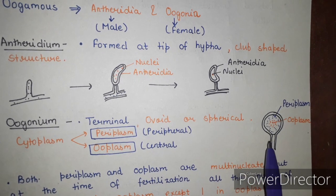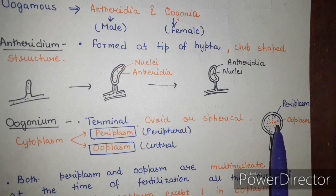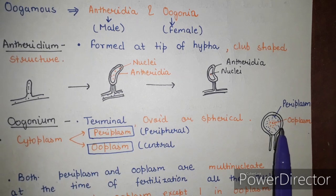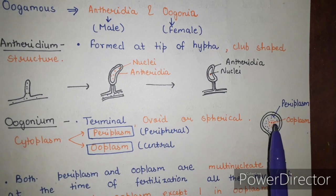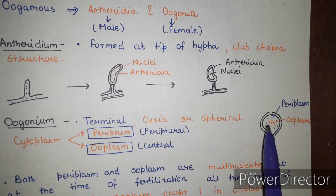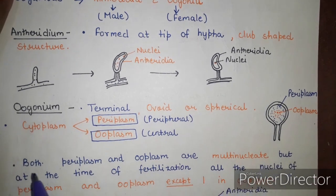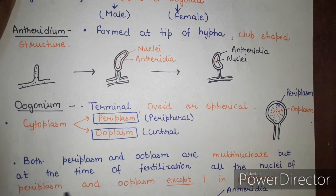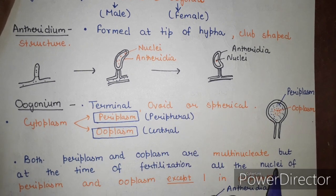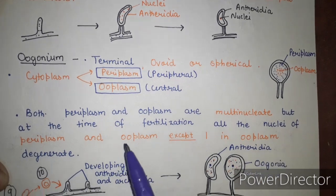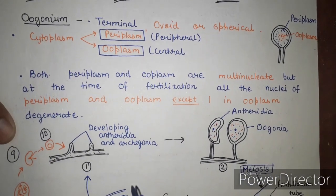The oogonium's cytoplasm is divided into two regions: peripheral periplasm and central ooplasm. In the earlier stages, all nuclei are present in both ooplasm and periplasm. But at the time of fertilization, all nuclei in the periplasm and ooplasm degenerate except one in the ooplasm. Both regions are multinucleate early on but reduce to single functional nuclei at fertilization.